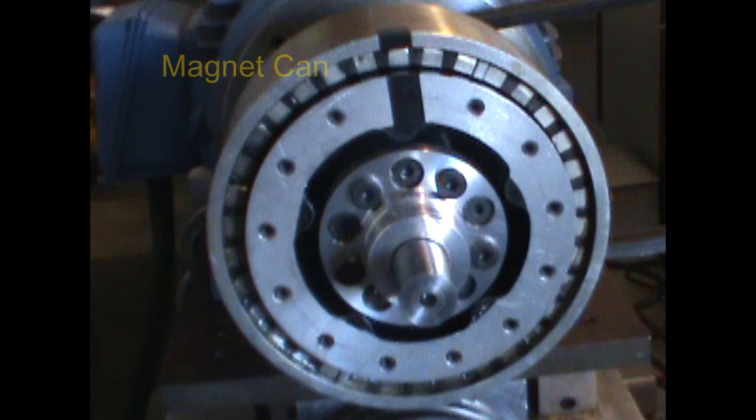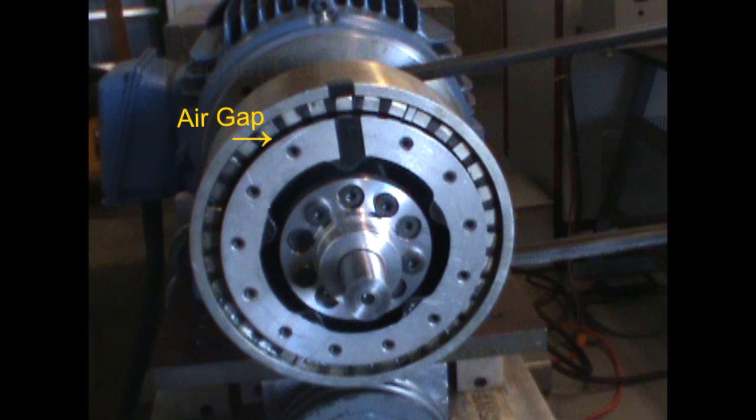The outside assembly is a steel can that houses the permanent magnets. There is a 70 thousandths air gap between the induction rotor and the magnets in the can.